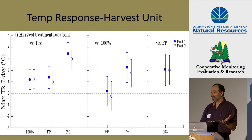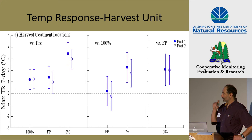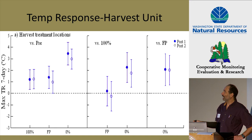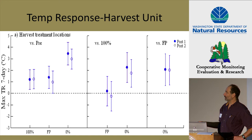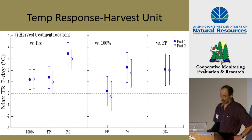Moving upstream to the site just below the harvest unit, Forest Practices results are the same since no sites were affected there. The 100% buffer showed a slightly higher temperature change of about 1.2 degrees in the first year post-harvest. The 0% treatment showed about 3.4 degrees. The same pattern holds: most treatments showed decreasing responses in the second year, Forest Practices was not really any different from 100%, and 0% changed more than either of the other two.